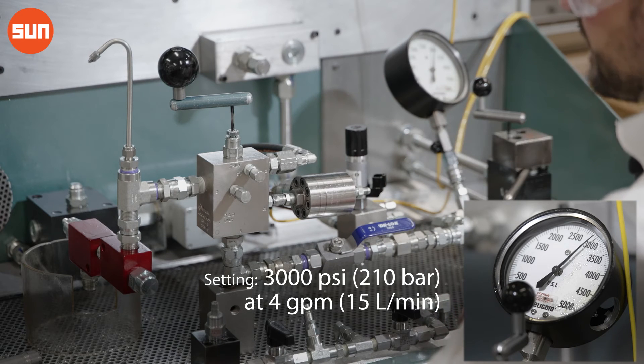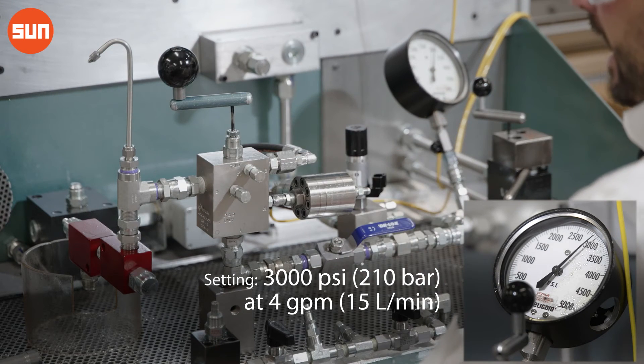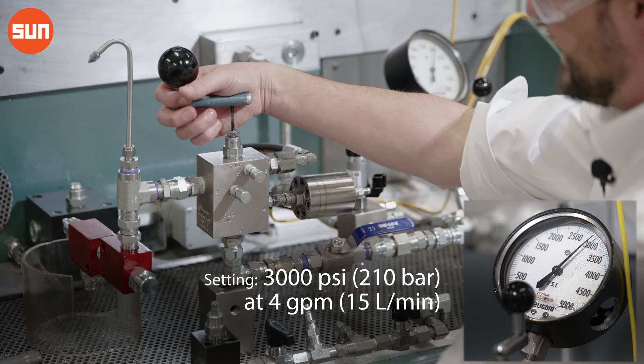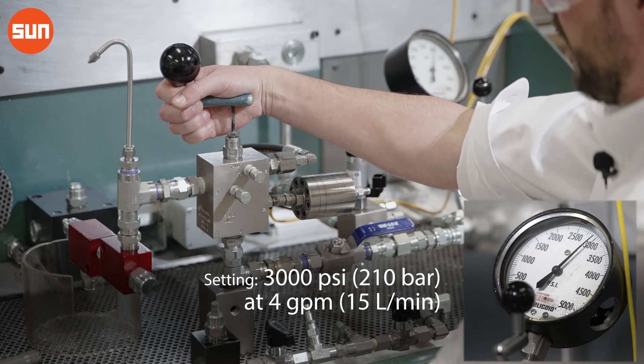All right, we've reached 3000 PSI and we don't see any oil yet. That means I need to decrease the setting of the counterbalance valve.